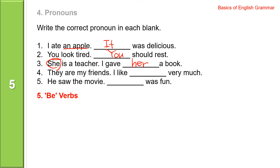They are my friends, so 'they' is the subject. I like blank very much, so it has to be an object, which is 'them'. They are my friends. I like them very much. He saw the movie — the movie is an object, a thing — and it was fun. Let's read the sentences one more time: I ate an apple. It was delicious. You look tired. You should rest. She is a teacher. I gave her a book. They are my friends. I like them very much. He saw the movie. It was fun.